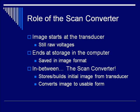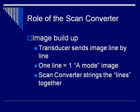The scan converter has two main roles. It stores and builds the initial image from the transducer, and then it converts that image to a more usable form. Recall that we essentially create a B-mode image by stringing together a series of A-mode images. Any given line in your B-mode image could be described as a series of varying voltages, which is what an A-mode image is. The scan converter converts these voltages into numbers, and then converts those numbers into an image.